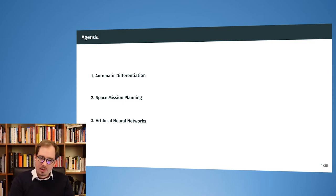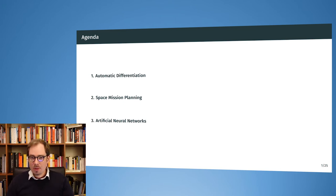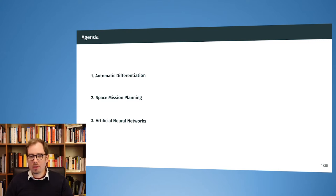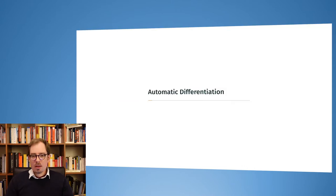We will see two applications. The first is space mission planning — something like NASA does when sending a person to an outer planet and planning an efficient trajectory for the rocket. The second example is artificial neural networks, where automatic differentiation is a very powerful technique and is the basis for backpropagation, the training algorithm for neural networks.